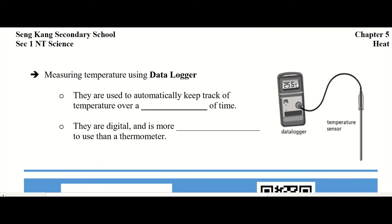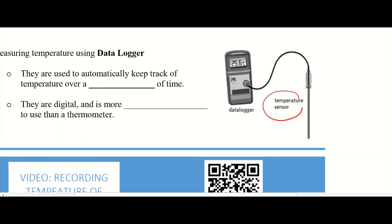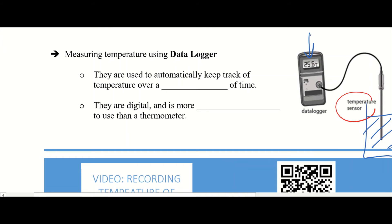Now there's another device you can use to measure temperature — it's called a data logger. It's a little electronic device — a machine. It has a sensor that looks like a stick; all you have to do is dip it into the liquid that you want to measure, and the machine will read out and register the temperature for you. They're used to automatically keep track of temperature over a period of time.